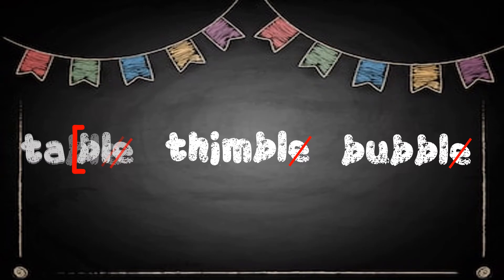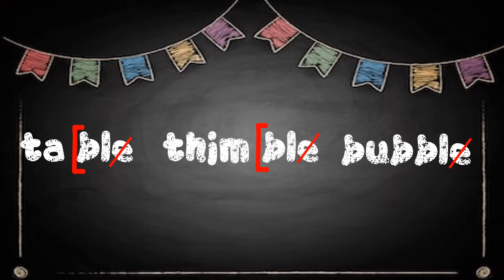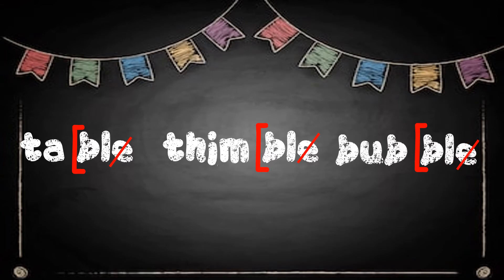We code a final stable syllable by placing a bracket in front of it. When a word has a final stable syllable, the accent mark usually falls on the syllable before the bracket. The bracket is like the dividing line we use when we code two-syllable words — it helps us separate the syllables. When we code the vowel, we look only at the letters in the syllable containing the vowel.